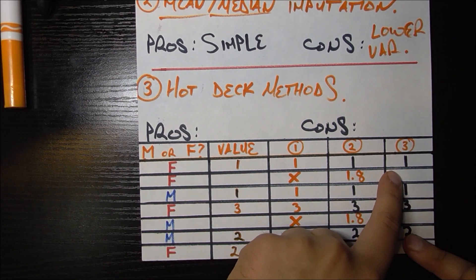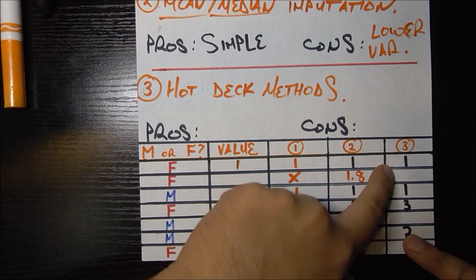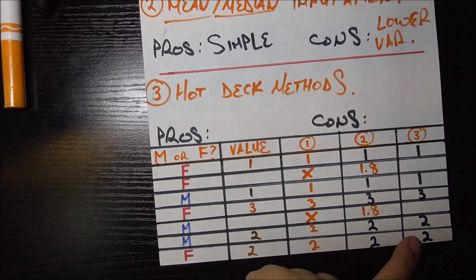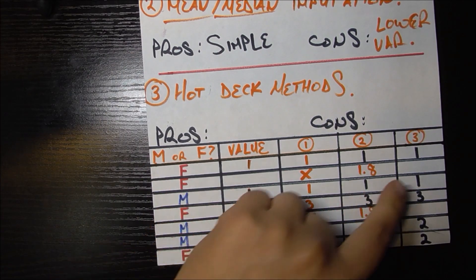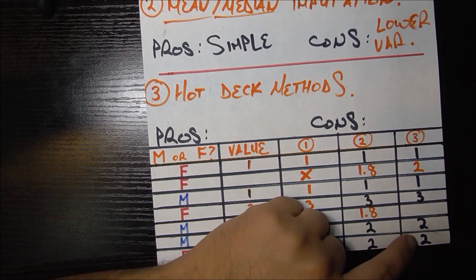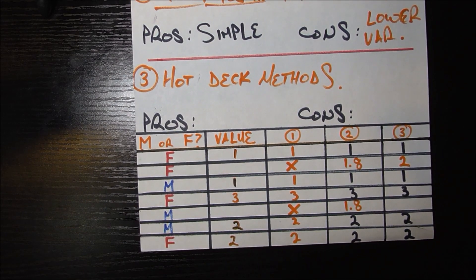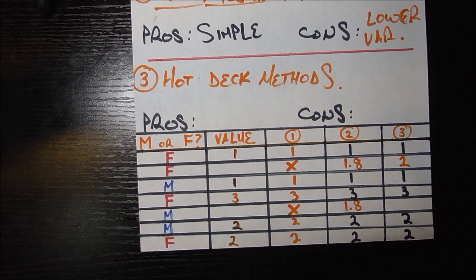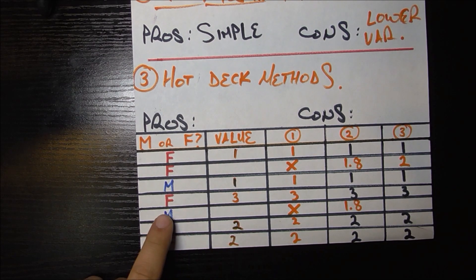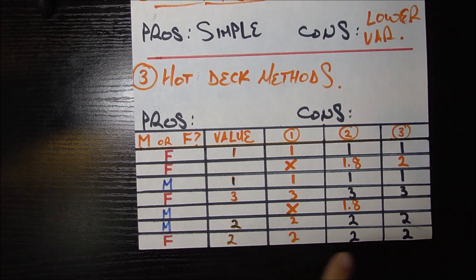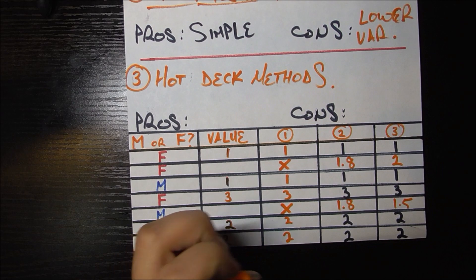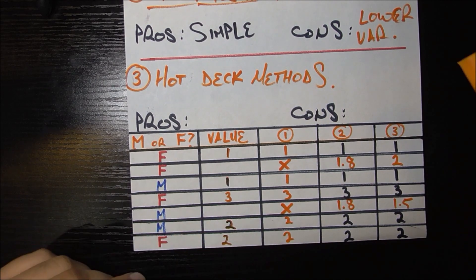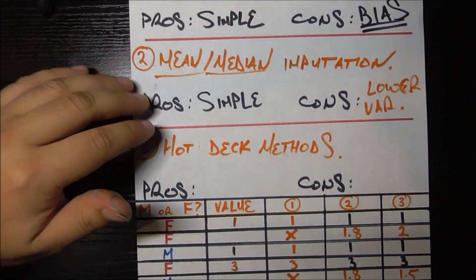So for this female who has a missing value, I'm going to take the average over the other females, who happen to be this one, this three, and this two, whose average is two. So again, let me use a different color. So for that reason I'm filling in this female's missing value as two, because it's the average of the overdue books for all the females that I do have data for. And again for this male I do the same thing. So the other males have a one, this one has a two. So I take 1.5 as my missing value here.